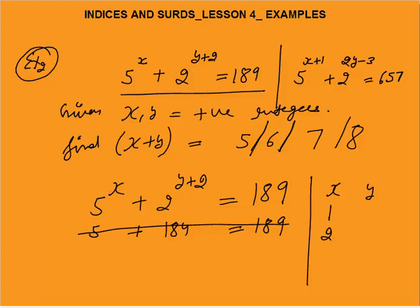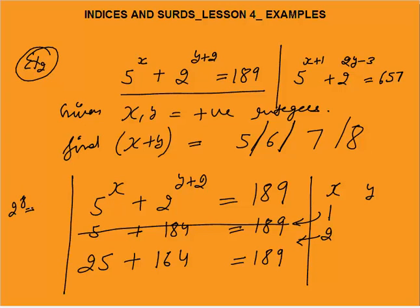Next, try x = 2: 5² = 25. We need 189 - 25 = 164. You must know the powers of 2: 2^7 = 128 and 2^8 = 256. Since no power of 2 equals 164, this is again not a solution.